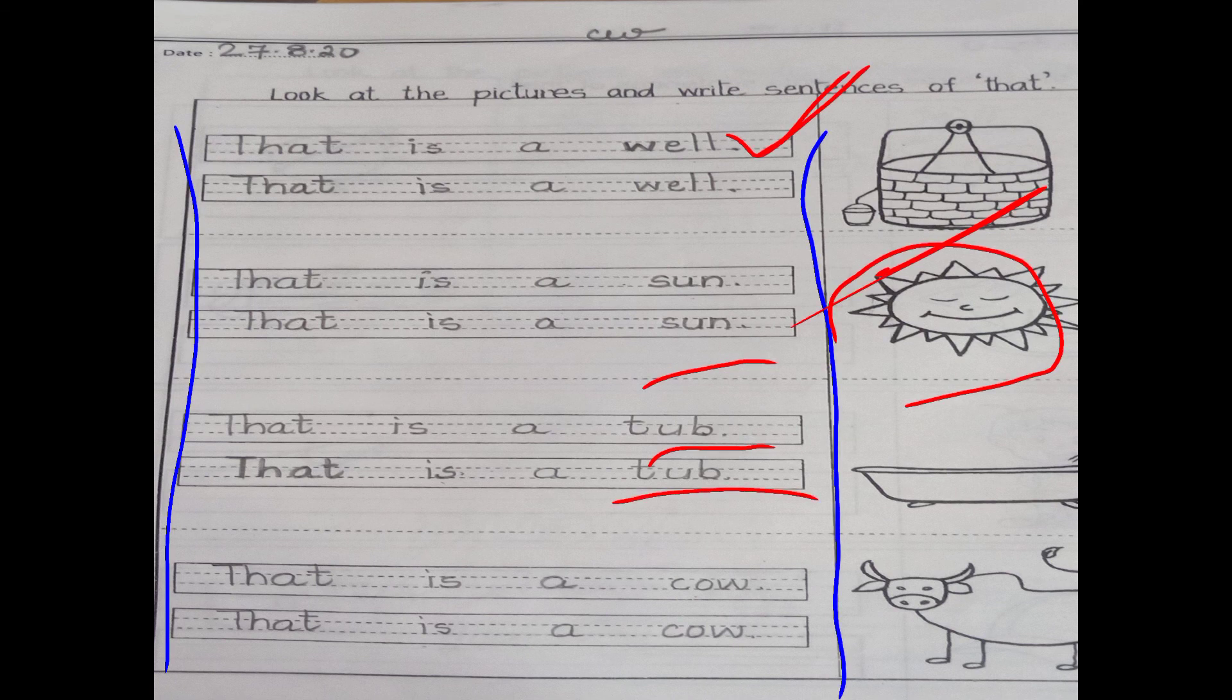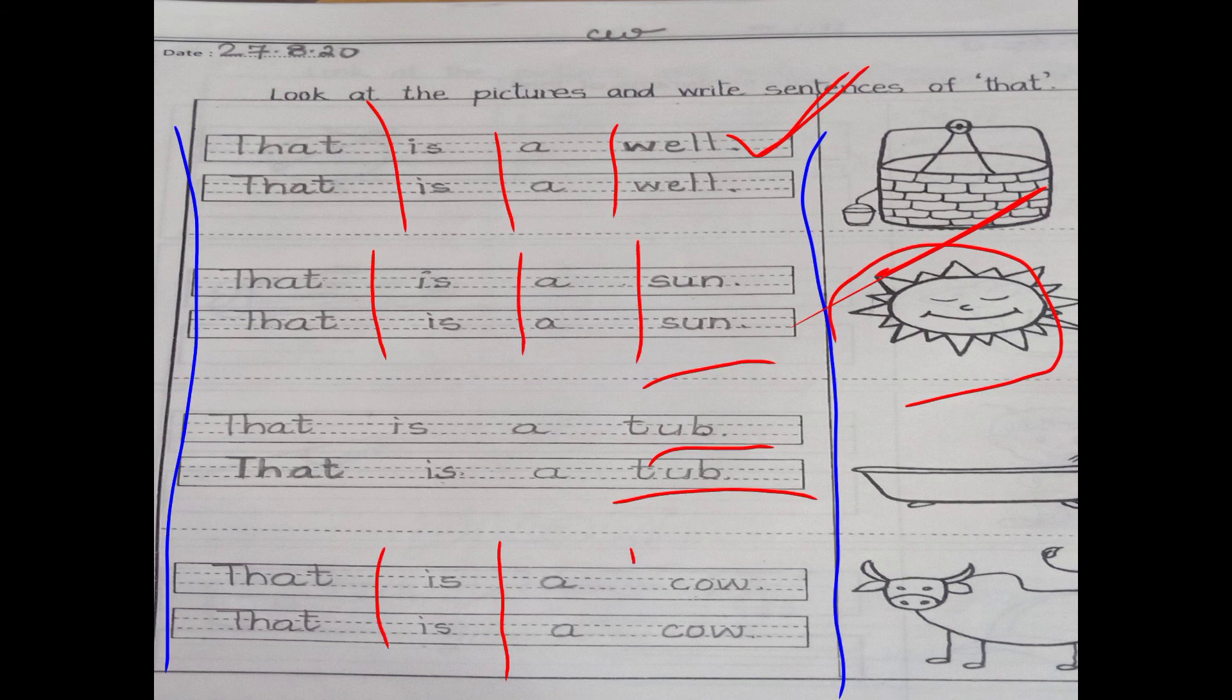So this is the work for today that you have to do in your spot. Aur aap ko kitna fingers ka gap dena hai? One finger ka gap. As well as what you have to mark at the last? Kya mark karna hai? Full stop. Jab humara sentence finish ho jata hai. Last sentence is that is a cow. C-O-W cow. So this is the work for today that you have to do in your spiral.